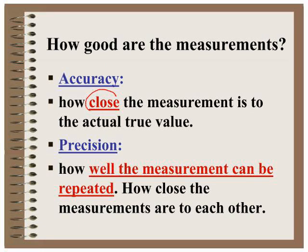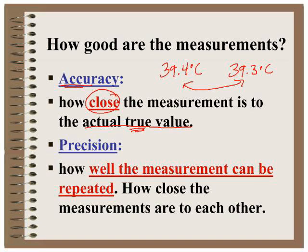Accuracy is how close the measurement is to the actual true value. For example, if you knew the melting point of a substance was 39.4 degrees Celsius and you conducted the lab and got 39.3 degrees Celsius, you would say that you were accurate. You were close to the actual true value.